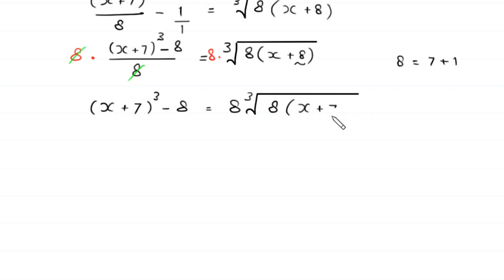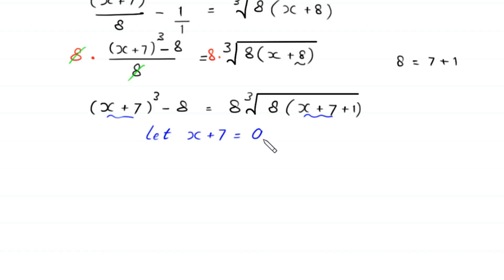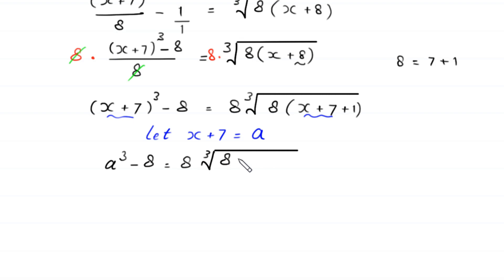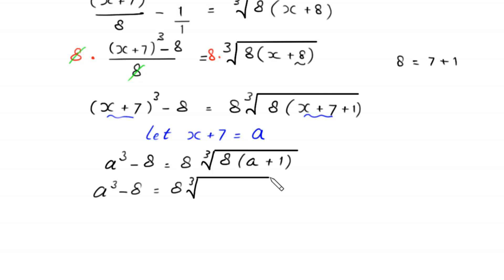Notice that (x+7) appears on both sides. So we suppose that x+7 equals a. With this substitution, the equation becomes a³ minus 8 equals 8 times the cube root of 8 times (x+8), where we will replace x+8 next.